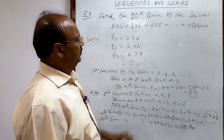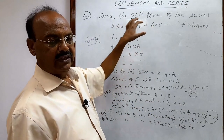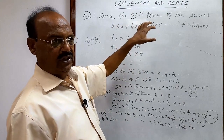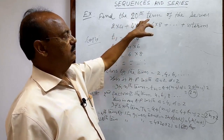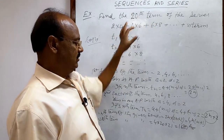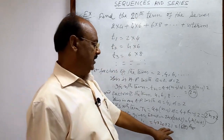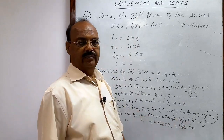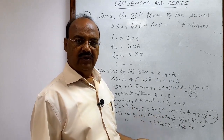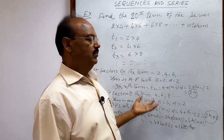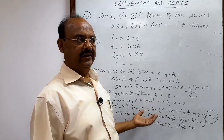First we find the nth term of the given series, and since we need the 20th term, we put n = 20 to get the answer. If we needed the 100th term, we would simply put n = 100 to get that term.